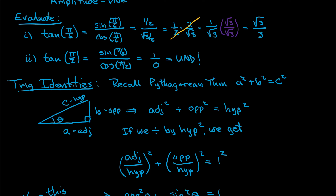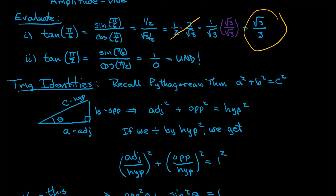You probably learned in algebra that you don't leave square roots in the denominator — it's hard to find common denominators when adding fractions that way. So we multiply by √3/√3, which is just a fancy way of multiplying by one. Multiplying numerators gives √3; multiplying denominators gives √3 × √3 = √9 = 3. This tells us that the tangent of π/6 is √3/3.